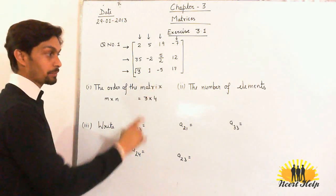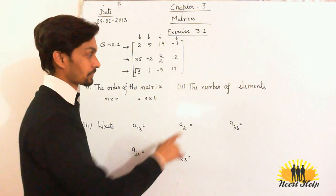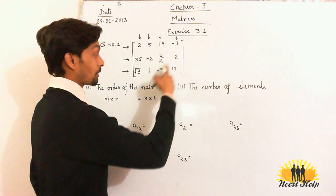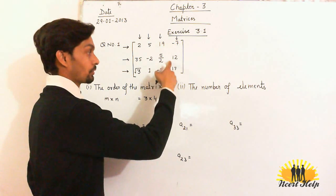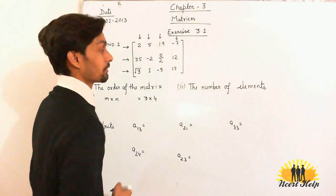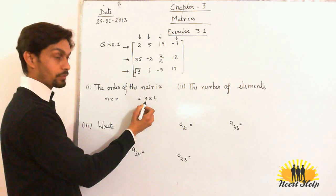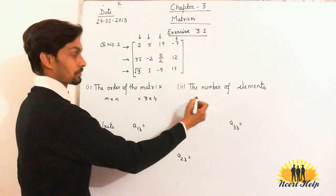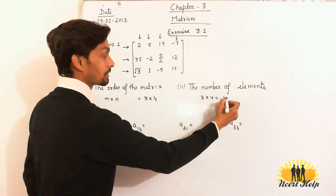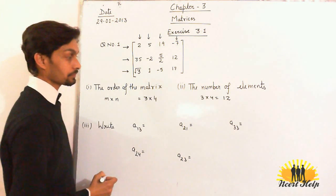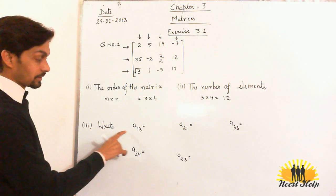The second part of the question is the number of elements. If you just count, there are four elements in each of the three rows — so twelve total. But we can find the number of elements simply by multiplying number of rows into number of columns. So the number of elements in the matrix is twelve.